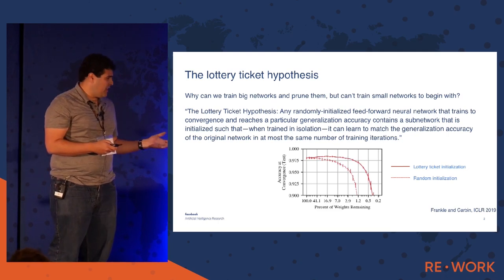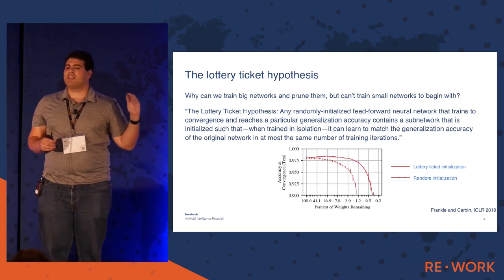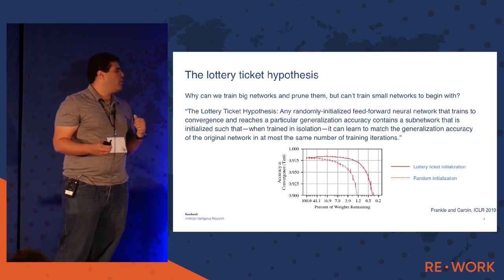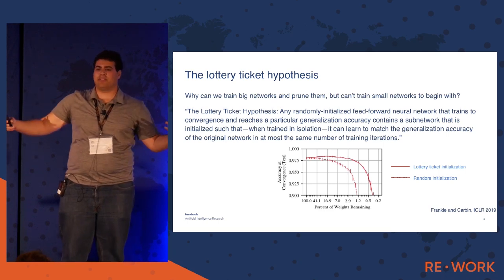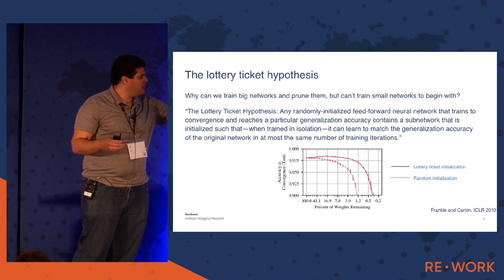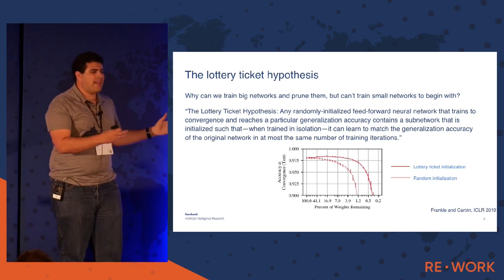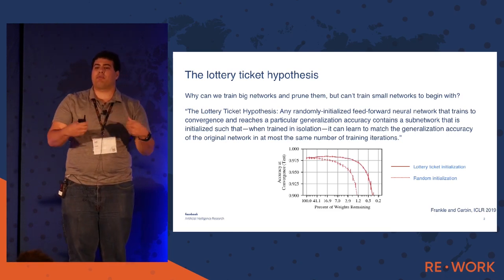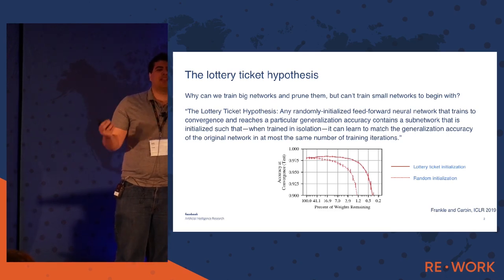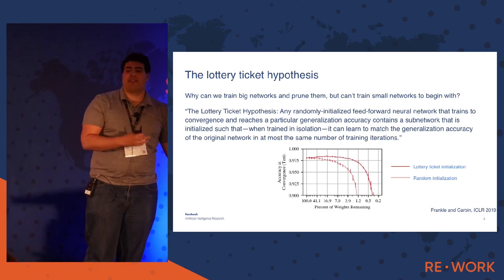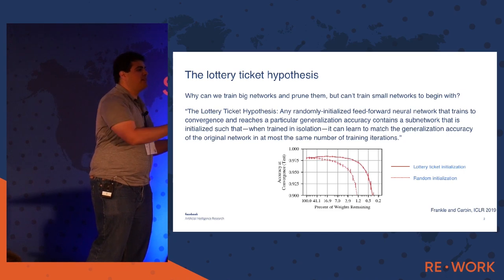I'm going to show a slightly different visualization of the data. Rather than showing training curves of what happens at 100% or 50% of the network, we can re-represent this by plotting on the Y-axis the network's final accuracy at convergence, as a function of how many weights we remove. On the X-axis, the far left is the full network before pruning, and going right makes the network smaller. The dark red line uses the lottery ticket initialization and the dashed red line uses random re-initialization. The dark red line does much better, and that gap between the two lines is what we consider the lottery ticket effect.